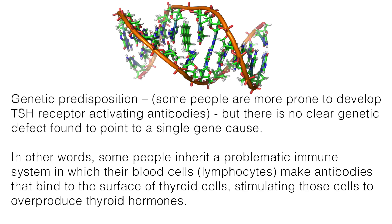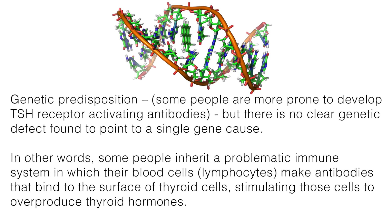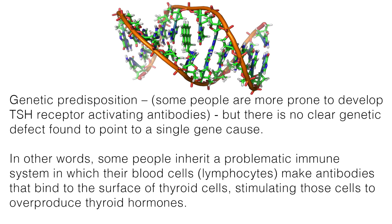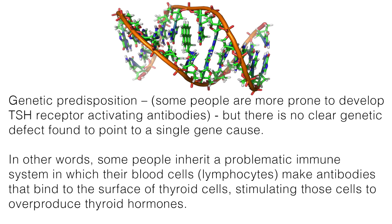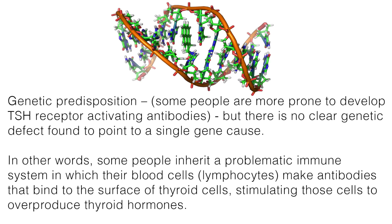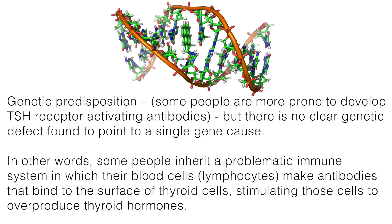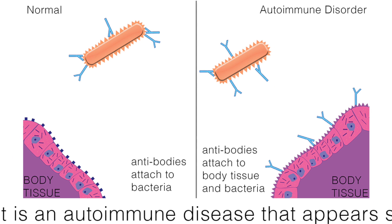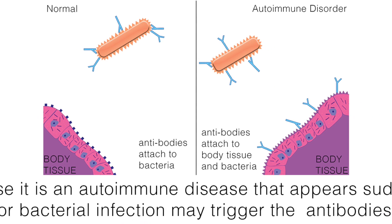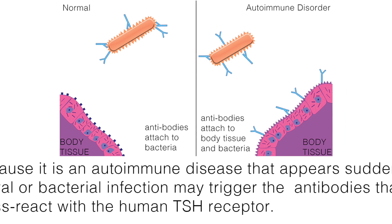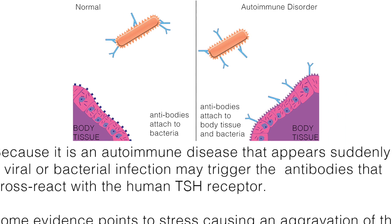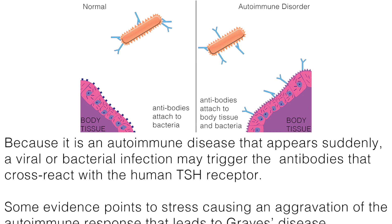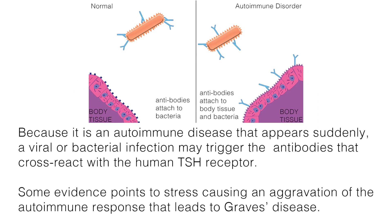The exact cause of Graves' disease is unclear, but it is usually linked to one of the following. Some people are more prone to develop TSH receptor activating antibodies, but there is no clear genetic defect found to point to a single gene cause. Some people inherit a problematic immune system in which their lymphocytes make antibodies that bind to the surface of thyroid cells, stimulating those cells to overproduce thyroid hormones. A viral or bacterial infection may trigger the antibodies that cross-react with the human TSH receptor. Some evidence also points to stress causing an aggravation of the autoimmune response that leads to Graves' disease.